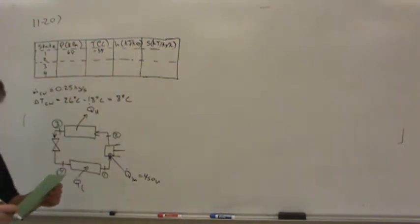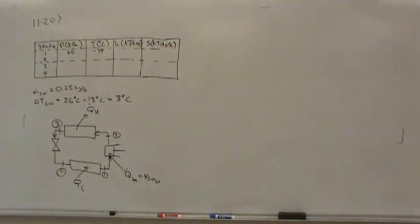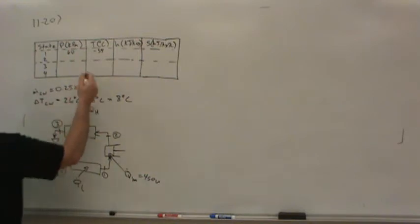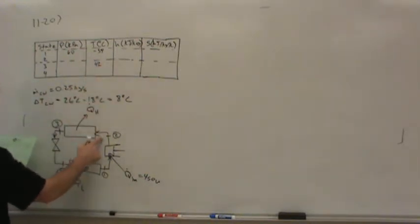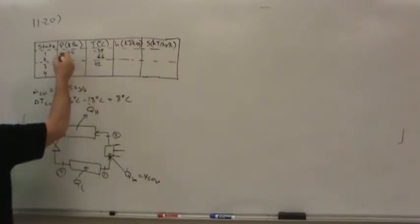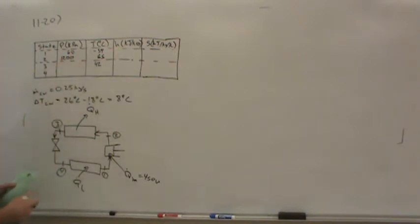The refrigerant enters the condenser at 1.2 megapascals, 65 degrees Celsius, and leaves the condenser at 42 degrees Celsius. We can put all that information in the table since here's the entrance and exit of the condenser. The exit — state 3 — is 42 degrees. The entrance — state 2 — is 65 degrees at a pressure of 1.2 megapascals, or 1200 kilopascals.